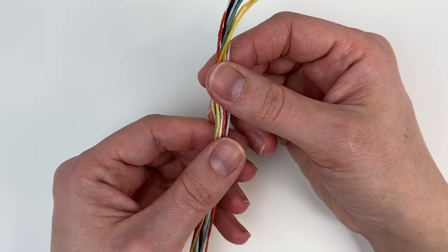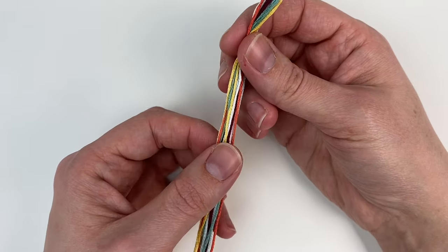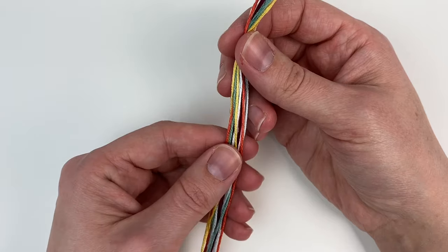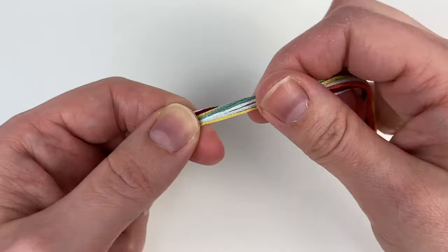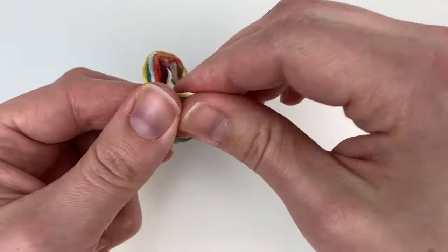First you're going to take all your embroidery floss and hold it together. There's 12 strands here, two of each color, and then you're going to tie an overhand knot about five inches down from one end.